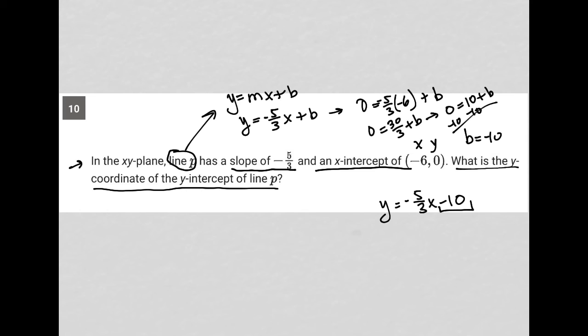It's kind of a weird way to ask the question, but this is my answer. Negative 10 is the y-coordinate of the y-intercept, because the y-intercept is where x is zero. So that's the x-coordinate and the y-coordinate would be negative 10.